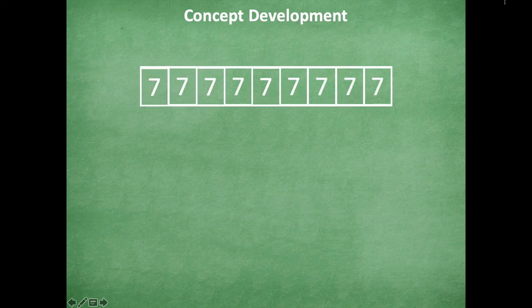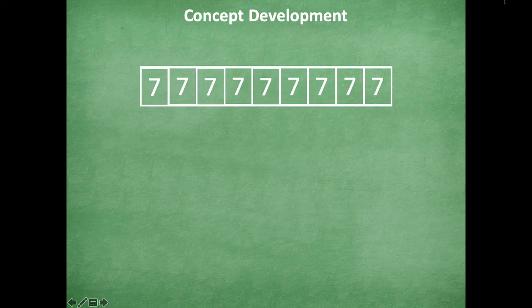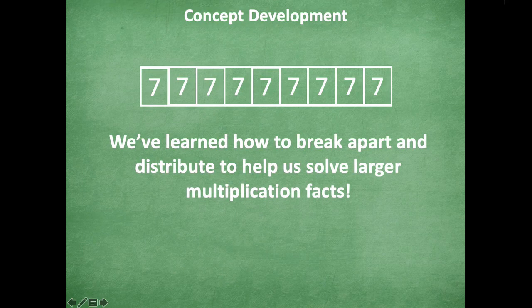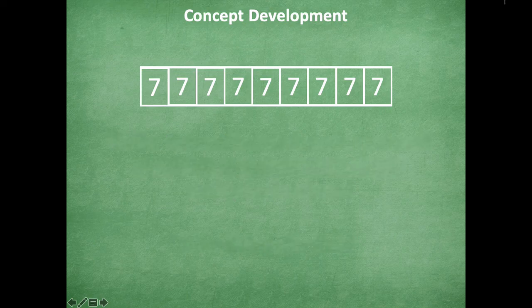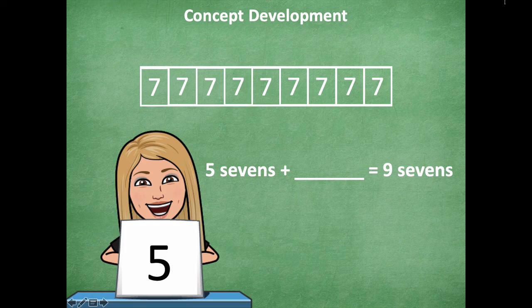Here I have my tape diagram. What multiplication fact matches this tape diagram? Nine times seven — say it in unit form: nine sevens. We've learned how to break apart and distribute to help us solve larger multiplication facts. We use that friendly five to break into smaller parts. Multiplying with fives is so much easier than most other facts. So five sevens plus how many sevens equal nine sevens? Four sevens, because five sevens plus four sevens equals nine sevens.